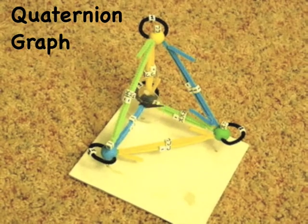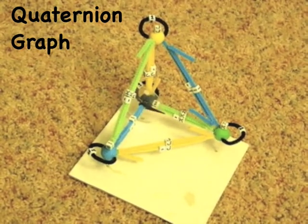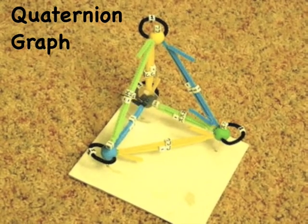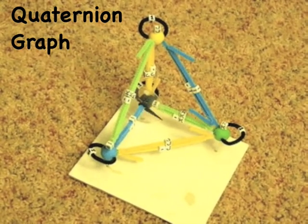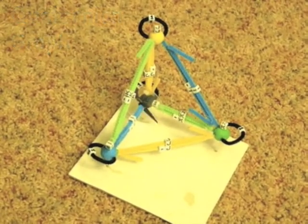Building a quaternion graph out of clay and pipe cleaners requires much work. All those double directional edges. It would be much simpler to use only one pipe cleaner per edge.